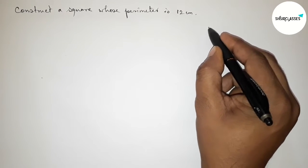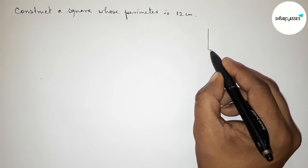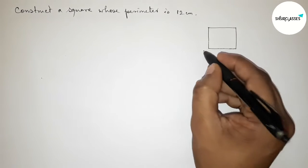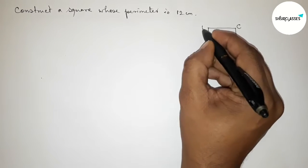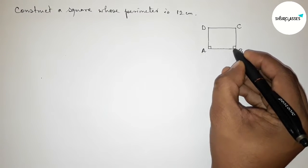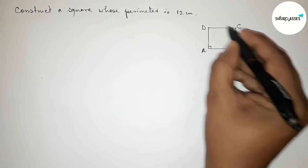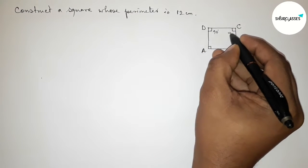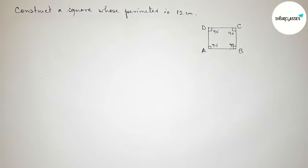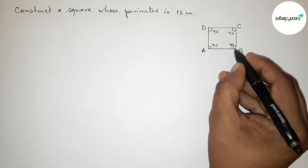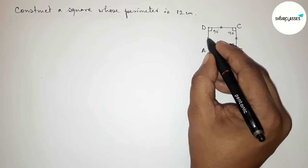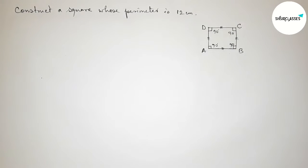First we have to find out the length of each side of the square. Let's start by roughly drawing a square and labeling it A, B, C, D. We know that all angles of this square are 90 degrees, and also that the lengths of all sides are equal.